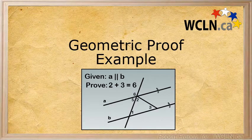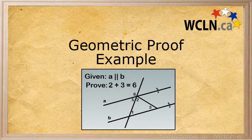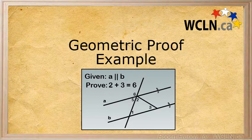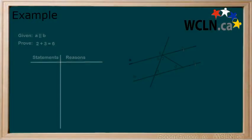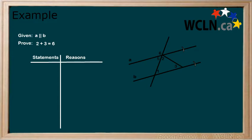In this tutorial, we will be working through a geometric proof. We start off the proof with the following information. Our given statement, that line A is parallel to line B, and that we need to prove that angle 2 plus angle 3 equals angle 6. We also are provided a diagram with all of the lines and angles already marked and a space to do our work.